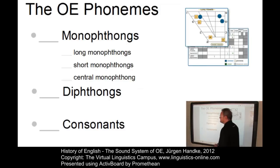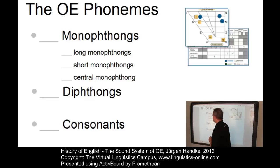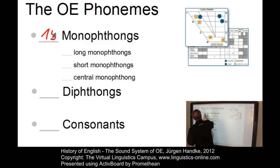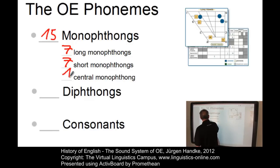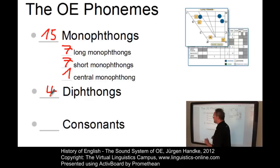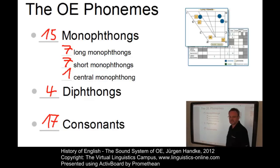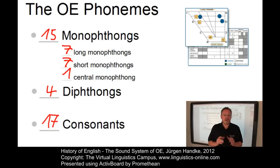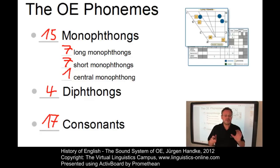Today, the following classes of phonemes are assumed for the West Saxon variety of Old English. We have fifteen monophthongs, subdivided into seven long ones, seven short ones, and one central monophthong. We have four diphthongal phonemes and seventeen consonantal phonemes. The consonantal phonemes had much the same value as in present-day English, but a different distribution. The vowels, by contrast, differed considerably from their modern counterparts.